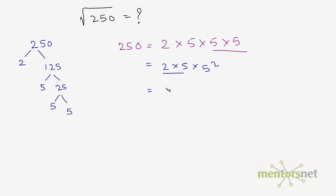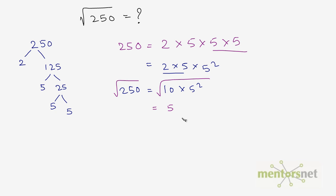So this equals 2 times 5 times 5 squared, which can be written as 10 times 5 squared. If we take the square root of both sides, we get the square root of 10 times 5 squared, which equals 5 times the square root of 10. So this is the final answer — it cannot be simplified further.